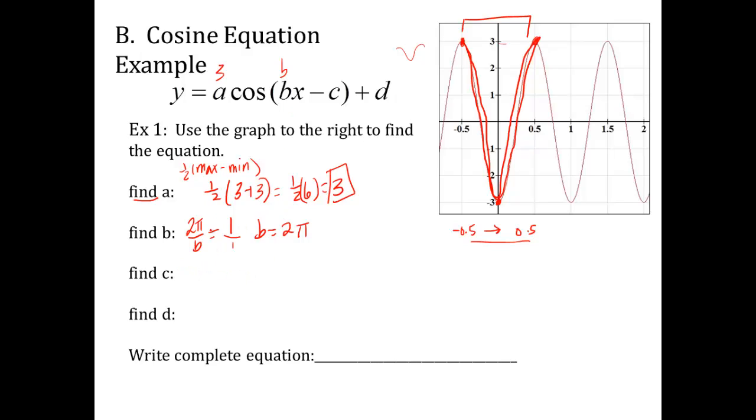C. Remember C is the X. You're going to calculate it using BX minus C. So B, we just found is two pi. X is the X value where your segment begins. So what's the X value right here where my segment begins? It's at negative 0.5. Minus C equals zero. Well, if I multiply two times negative one half, that's going to be negative pi. Minus C equals zero. So C is equal to negative pi.